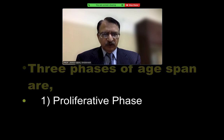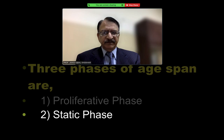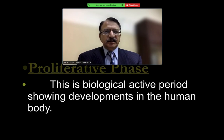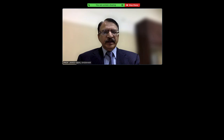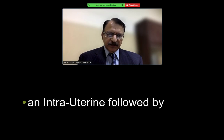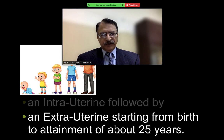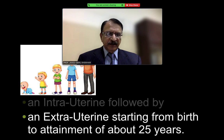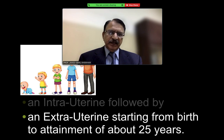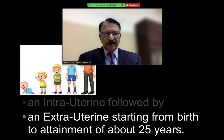The three phases of the age span are: first, the proliferative phase; second, the static phase; and third, the retrogressive phase. In the proliferative phase, this is a biologically active period of development in the human body, and it has two distinct stages — an intrauterine stage, starting from conception to the development of the fetus to full term, and an extra-uterine stage, from birth up to the age of 25. This is the proliferative phase during which development and proliferation of various centers is ongoing.